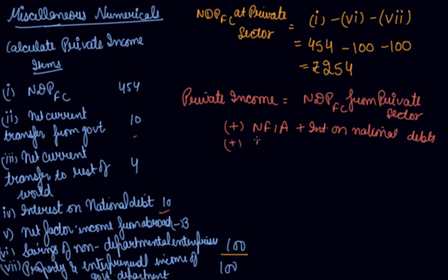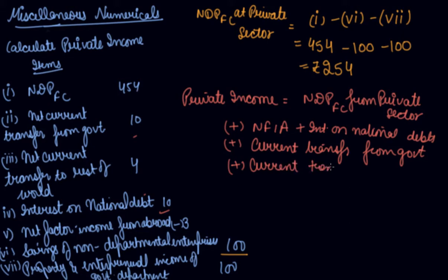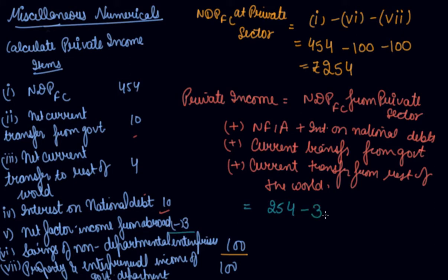Plus current transfers from government. Plus current transfers from the rest of the world — that is 4. So you get the total income from abroad, which is minus 3. Plus interest on national debt, which is 10. Plus net current transfer from government, which is 10. Current transfers from rest of the world — that is 4.